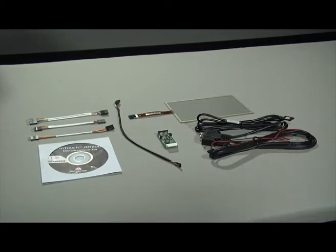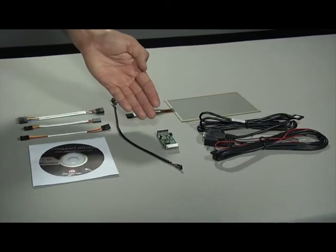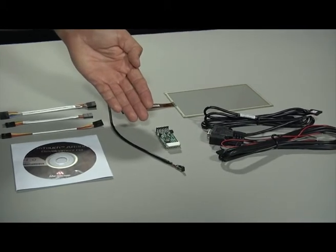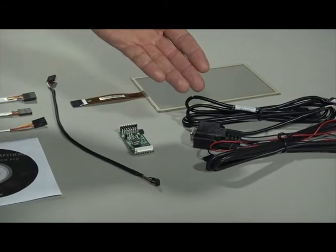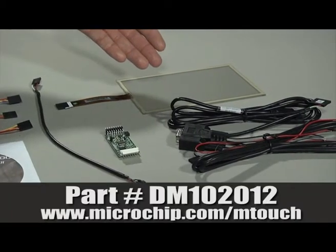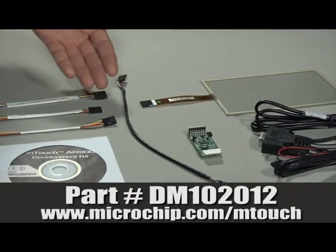The M-Touch AR1100 development kit provides everything designers need to get started using AR1100 analog resistive touch controllers for a turnkey, cost-effective touch solution. The kit includes the production ready AR1100 controller board, USB and serial communication cables, a 5-wire 7-inch touch screen, and extra touch screen pin-out adapter cables.